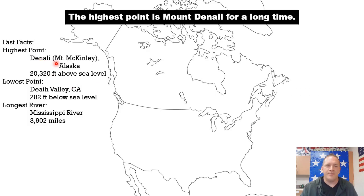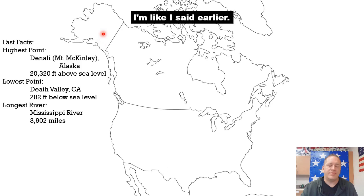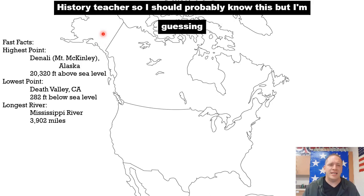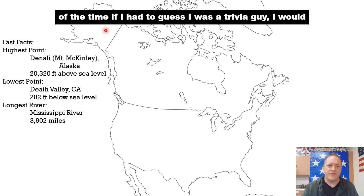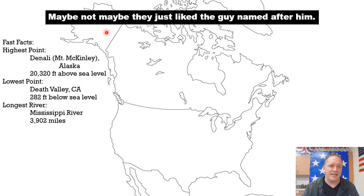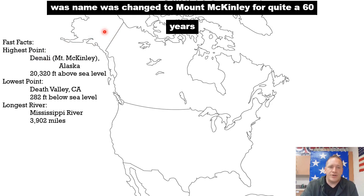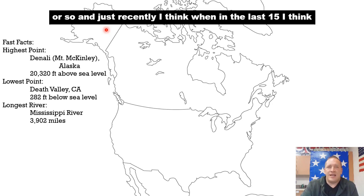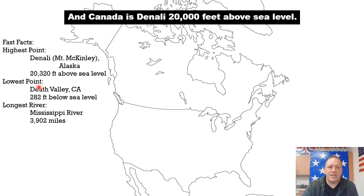The mountain was originally called Denali by the natives. The name was changed to Mount McKinley — I'm guessing McKinley was our president when the United States bought Alaska from Russia. The name stayed that way for about 60 years, and then just recently — I think when Obama was president — the name was changed back to Denali. Anyway, that's the highest point in the United States and Canada: Denali at 20,000 feet above sea level.